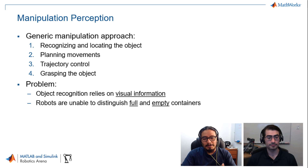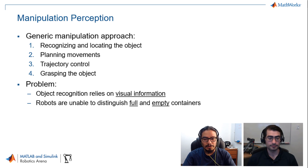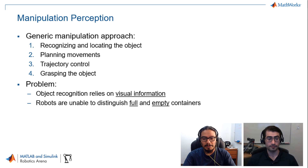What's the problem? What if the user asks the robot to bring a beverage and the robot finds two cans on a table — one empty and one full? With these four steps, manipulation perception mainly relies on visual information. Robots commonly use cameras, depth information, or sometimes LiDAR sensors, but most information is only visual. So with this approach, the robot is unable to distinguish what container is full and what is empty.